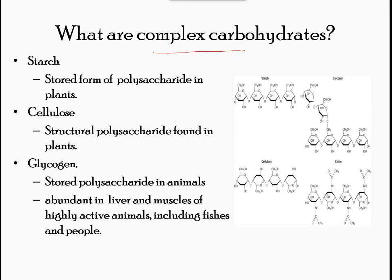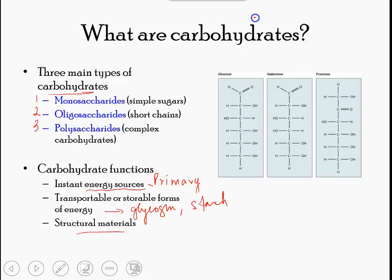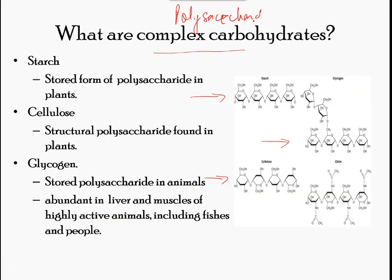A long chain of monosaccharides linked by covalent bonds is known as a polysaccharide — 'poly' meaning many. The chain may be branched or unbranched and may contain different types of monosaccharides. Polysaccharides may be very large molecules. Starch, glycogen, cellulose, and chitin are examples of polysaccharides.